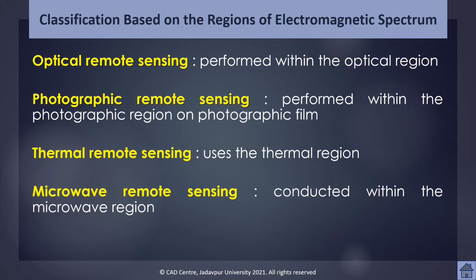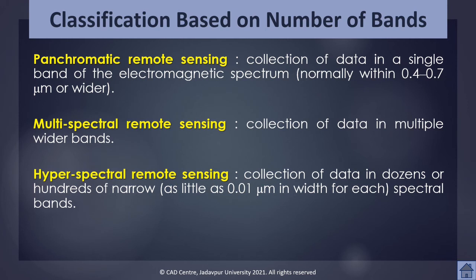Next is the classification based on number of bands. Images of a geographic area may be collected in a single band or more than one band. Remote sensing can also be classified based on the number of bands to which the sensor is sensitive. Panchromatic remote sensing is defined as the collection of reflected, emitted, or backscattered energy from an object or area of interest in a single band of the electromagnetic spectrum. Generally, images are collected within the visible region, that is within the range of 0.4 to 0.7 micrometers.